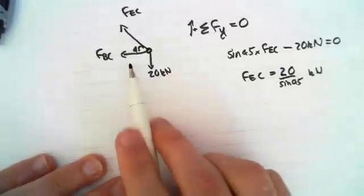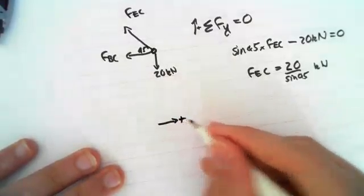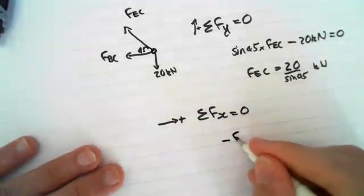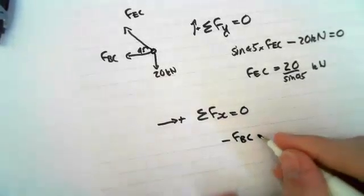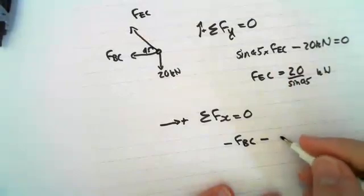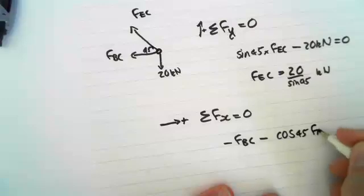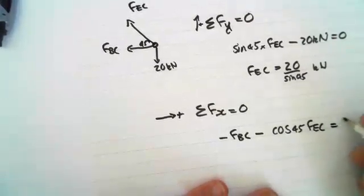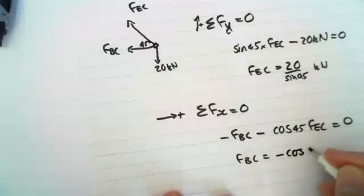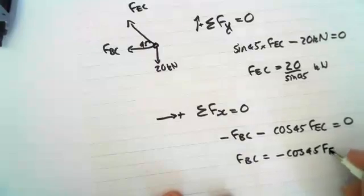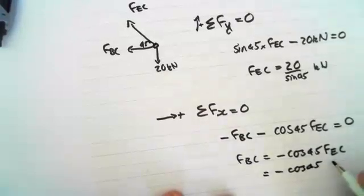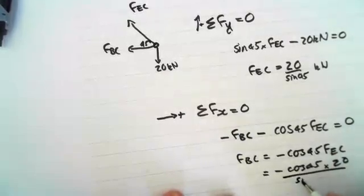And then, so now we've got that. We can work out this in the x-direction. So we just do as right being positive. Sum of Fx equals zero. So we have negative FBC minus, and then we have to take the x component of this. So that's cos 45 FEC. You can see that equals zero. FBC equals negative cos 45 FEC, which equals negative cos 45 times 20 on sine 45.